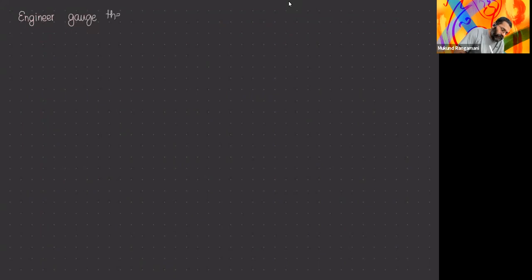Let's take seriously the fantasy that there is a close connection between the genus expansion of perturbative Feynman calculus for large-N matrix models and some kind of string theory. Let's try to reverse-engineer it and ask: if we had to get these gauge theories from string theory, where would we get them? We can engineer gauge theories in string theory because D-branes do that for us: the worldvolume theory of D-branes is a gauge theory.